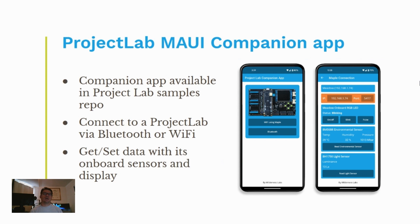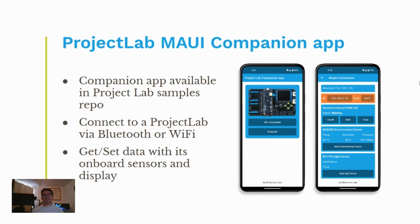For this demo, putting MAPLE to run as a server will need a client. We have a Project Lab companion app built with MAUI, and this companion app is already available in the Project Lab samples repo if you want to take a look at how it's written. It gives you the capabilities to connect to your Project Lab via Bluetooth or Wi-Fi, and the intention is to show you how to get and set data with its onboard sensors and peripherals.